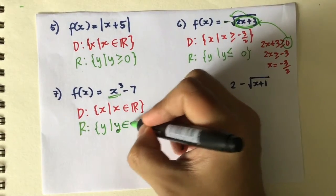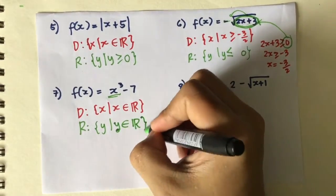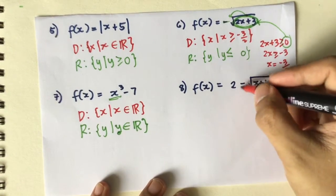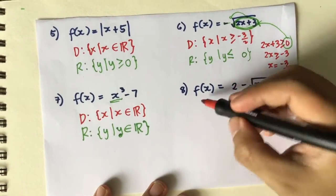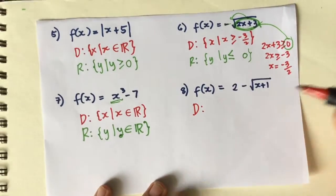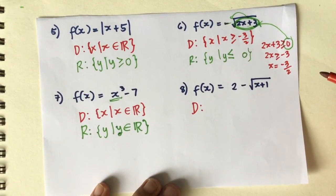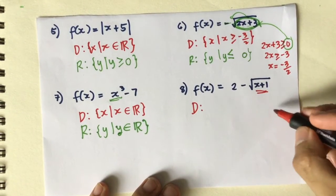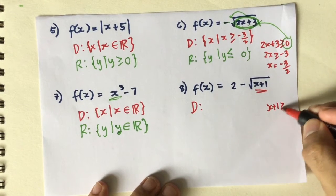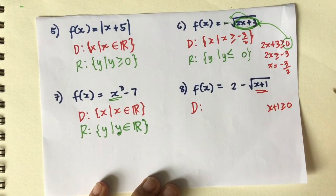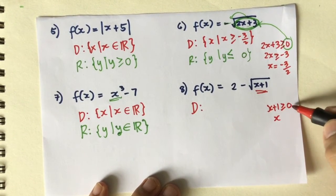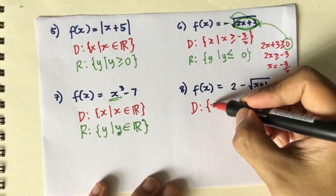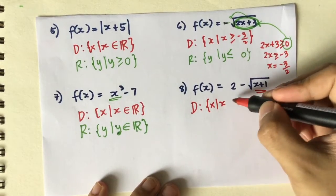The range is affected by the exponent. Since x cubed uses a unique value of x to produce a unique value of y, the range is not limited — we can get any values of y. For number 8, we don't care about the coefficient 2 for the domain; our concern is the expression under the square root, which must be greater than or equal to 0.